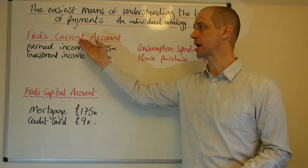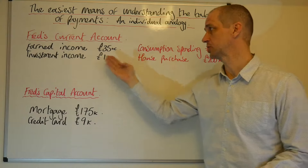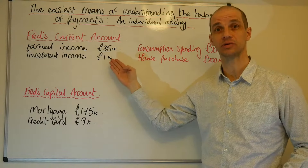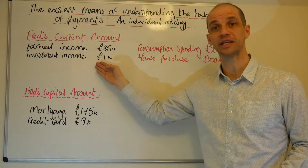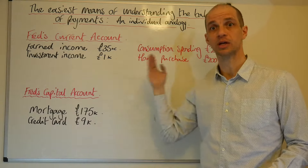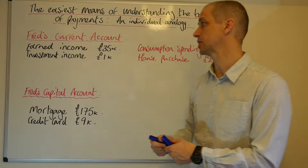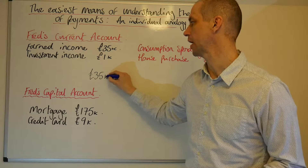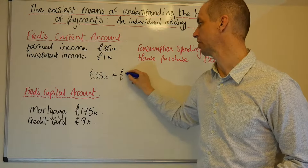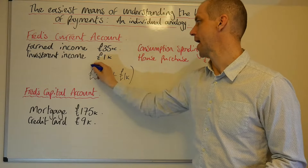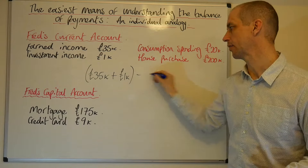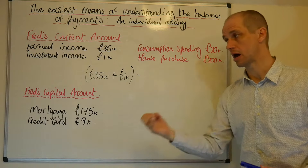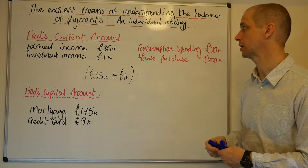So we've got Fred, whose current account position is as such. We've got earned income of £35,000 and meanwhile we've also got investment income totaling £1,000. So let's put those down: £35,000 plus £1,000, and now let's look at how he's spent the money that has come into his bank account.